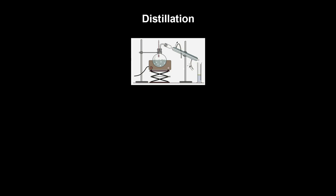Distillation separates chemical species from a mixture by taking advantage of their known boiling points. A typical example is a mixture of water, which has a boiling point of 100 degrees, and ethanol with a boiling point of 78 degrees. The mixture is placed in a distillation flask, and a thermometer is used to monitor the temperature to ensure one substance boils at a time. You have a heat source or heating plate to boil the mixture.